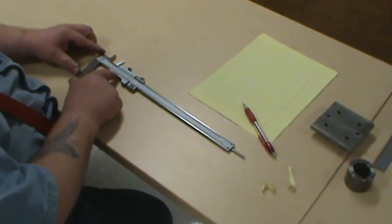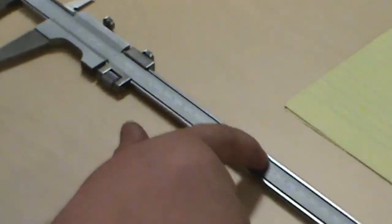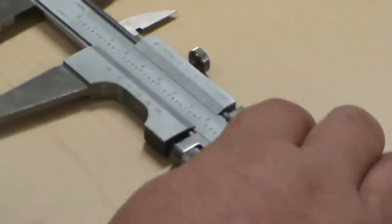We have our vernier scale on the sliding jaw and our solid steel scale on the solid piece of the beam. We'll get into reading that in a little bit.